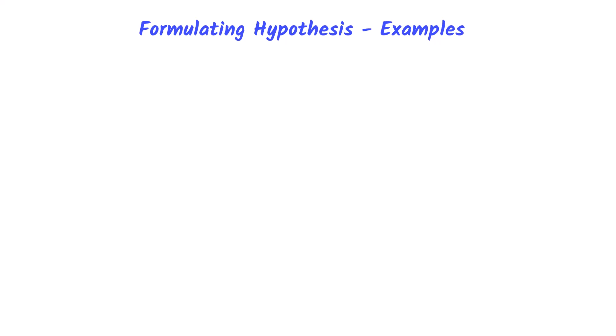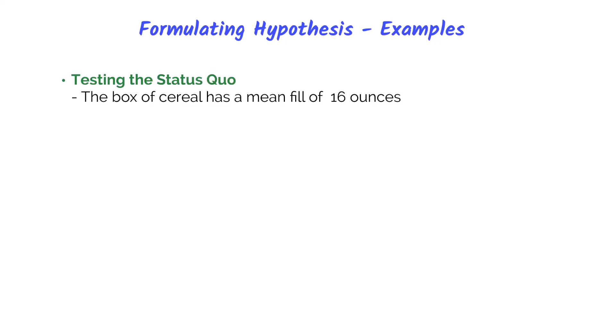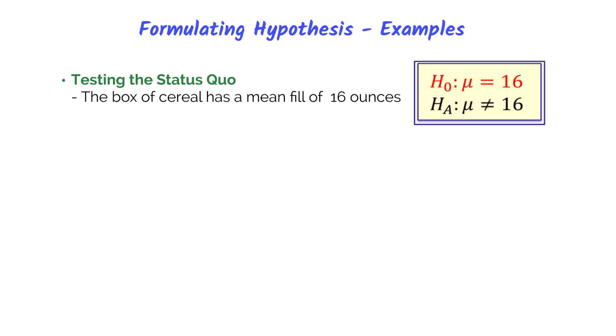There are three common reasons to test a hypothesis in business. The first is to test the status quo to see if everything is working fine or if something needs to be fixed. For instance, Kellogg's cereal wants to make sure its cereal boxes are filled with 16 ounces of cereal — if it fills too little, customers will be dissatisfied; if they overfill it, they're giving away extra cereal for free. So the null hypothesis states that the mean fill of the cereal box equals 16 ounces, meaning the machine is working. The alternative hypothesis states that the mean fill does not equal 16 ounces, so something is wrong with the machine.